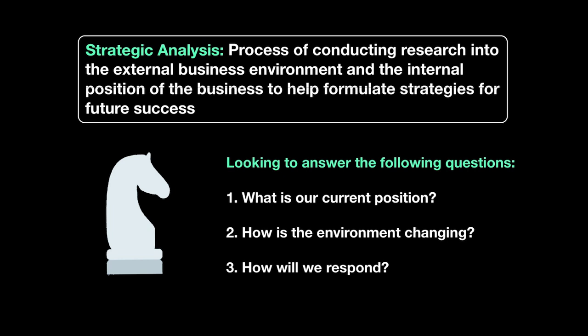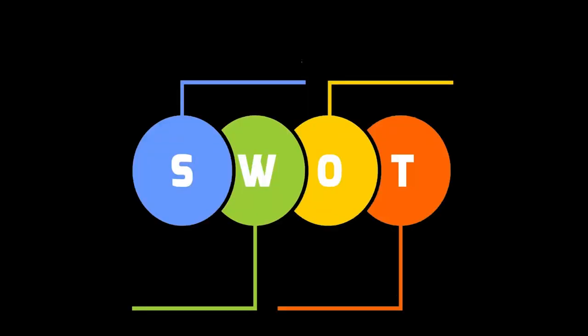And thirdly: how are you going to respond to these changes? That's what strategic analysis will help us to figure out. With that, let's begin with the first technique called SWOT analysis. The word SWOT itself, as you can see, is clearly an acronym, and each of these letters stand for the different aspects that the business wants to look at during its strategic management process.